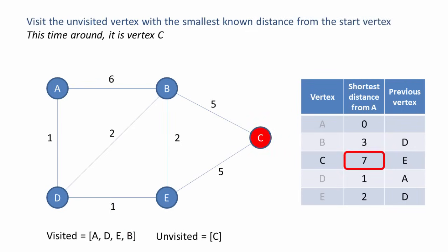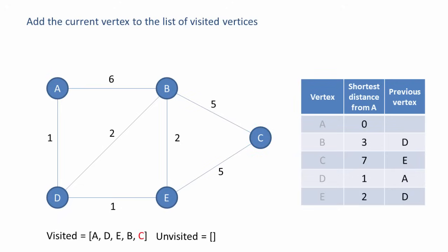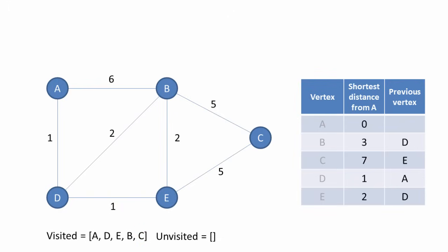We visit the unvisited vertex with the smallest known distance from the starting vertex — this time it's C. For the current vertex, we examine its unvisited neighbours. We're currently visiting C, but it doesn't have any unvisited neighbours. There's nothing to do but add the current vertex to the list of visited vertices. There are no more vertices to visit, so our table of information is complete.